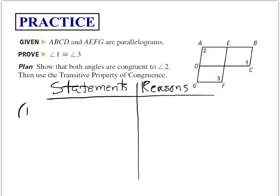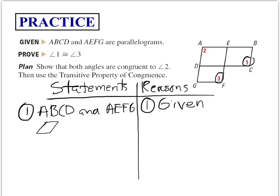So we're given that ABCD and AEFG are parallelograms. Now once we're doing these in proofs, you guys can start drawing them this way. And that's given to us. Now what we want to prove is that angle 1 is congruent to angle 3.